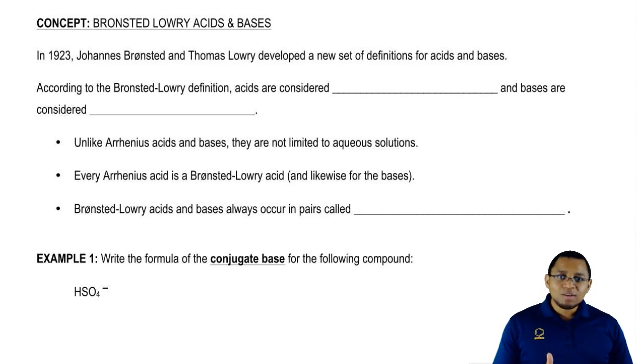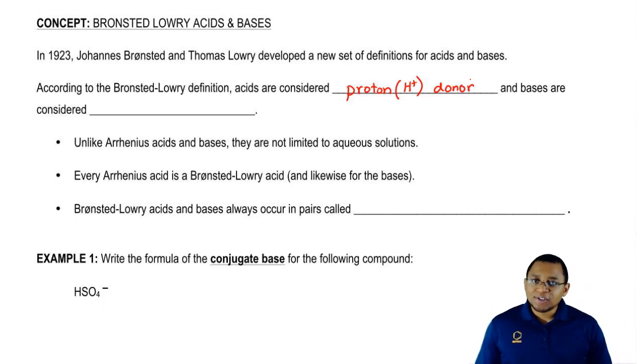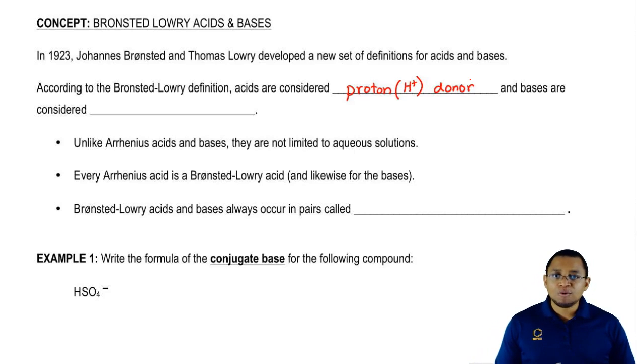We're going to say according to their definition, an acid was considered to be a proton donor, and when we say proton, we mean H+. This first definition still goes in hand with the Arrhenius definition because the Arrhenius acid is something that increases H-plus concentration when dissolved in water.